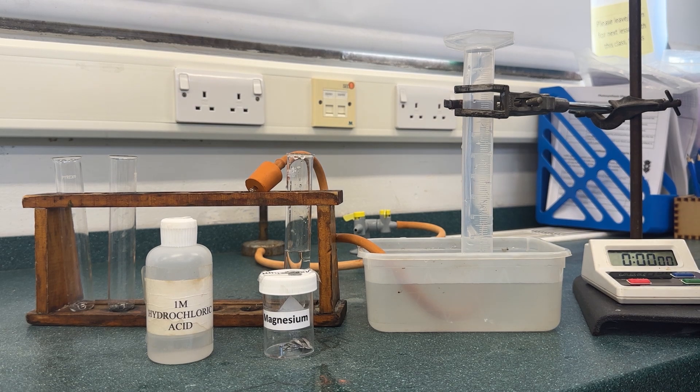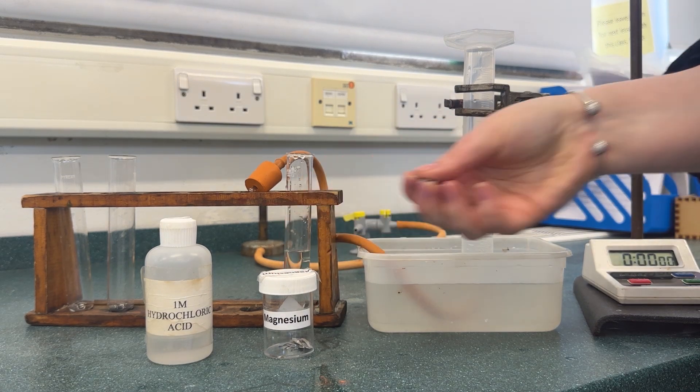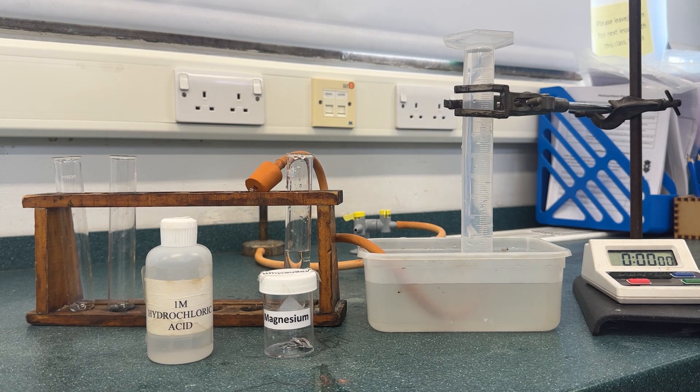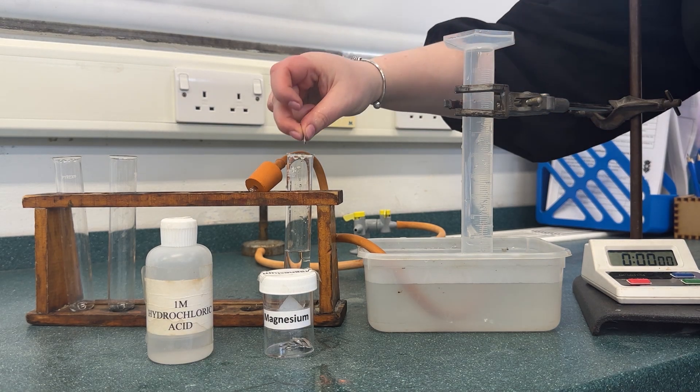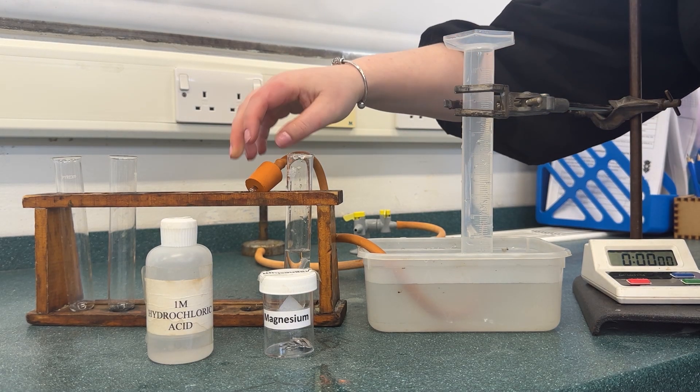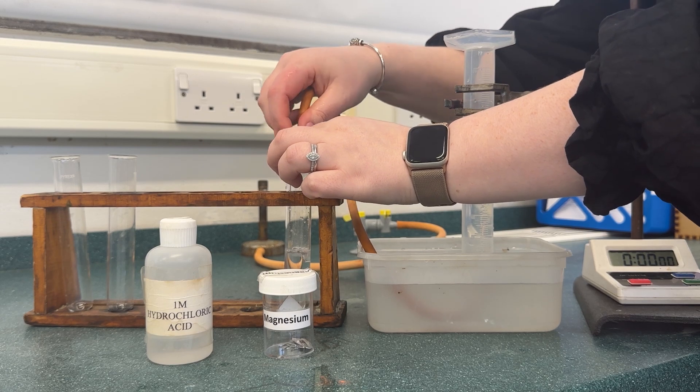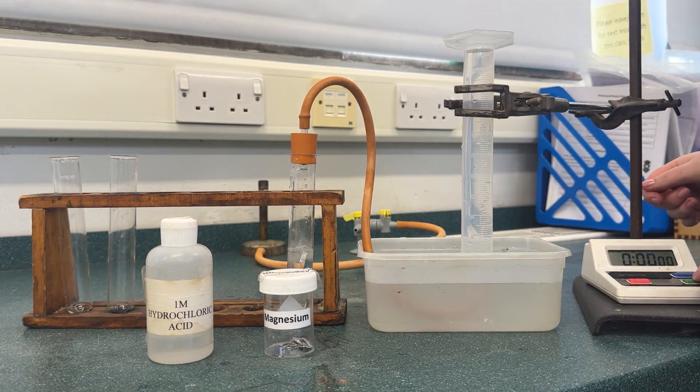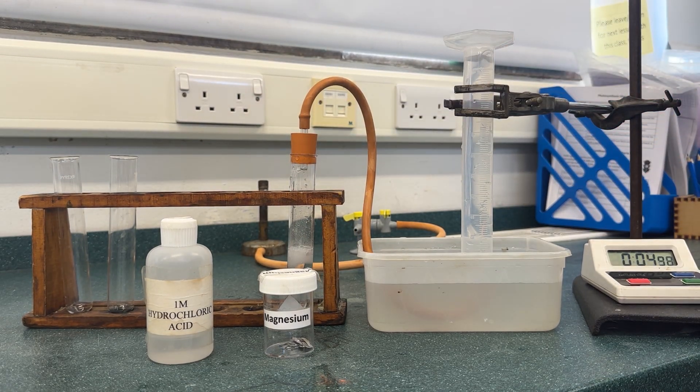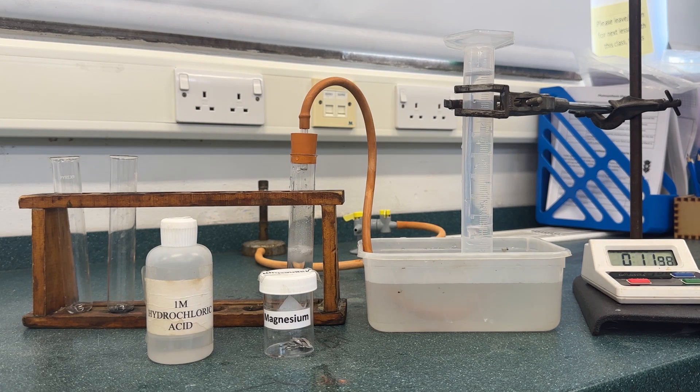To carry out this method you need to have your reactants ready to go and have your delivery tube underneath your measuring cylinder of water. Here you can see I'm going to add the magnesium to the hydrochloric acid and then I'm going to stopper the delivery tube very quickly and start the timer whilst we're starting to collect the gas. From this point you want to read your measuring cylinder at set time intervals.